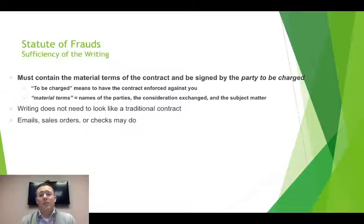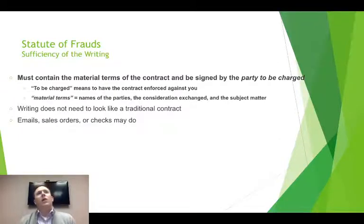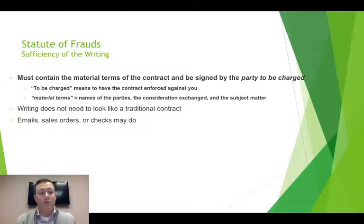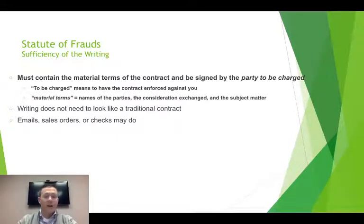In that case, he wrote enough to describe what land he was going to sell and what the other consideration was — the price his friend was going to pay. The statute of frauds also requires that it be signed by the party to be charged: the person you're trying to get a court to enforce it against. Only one party needs to sign — the party you're going to sue. In this case, the guy selling the farm signed the napkin, and because he later reneged on the agreement, it was enforceable because it had the material terms and was signed by the party to be charged.